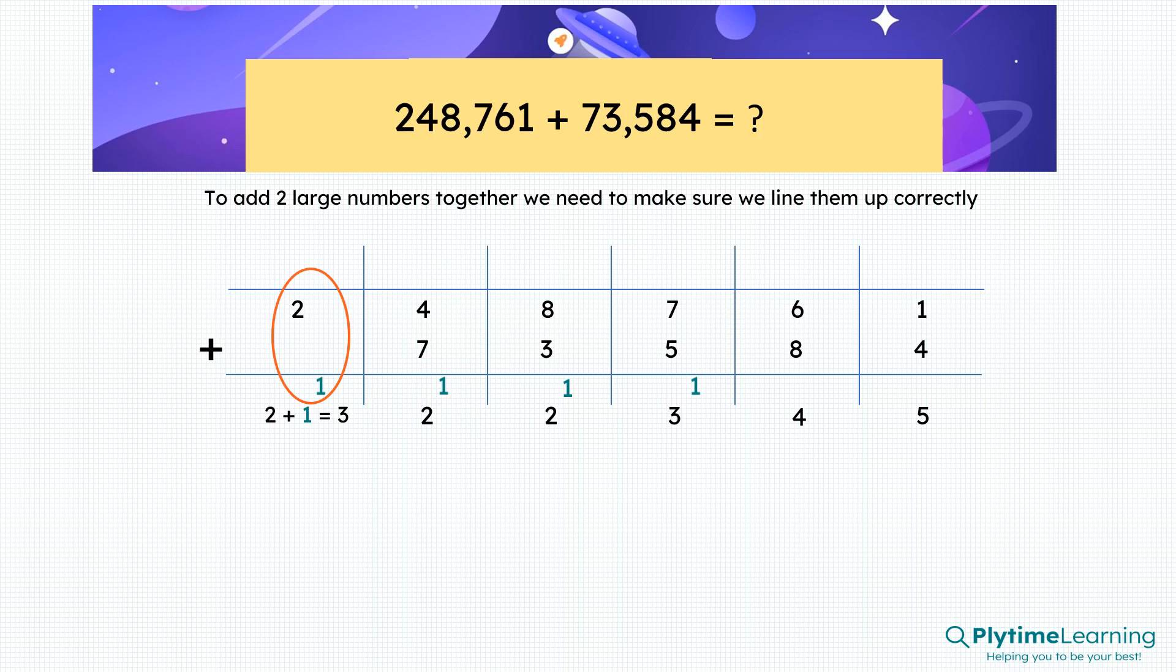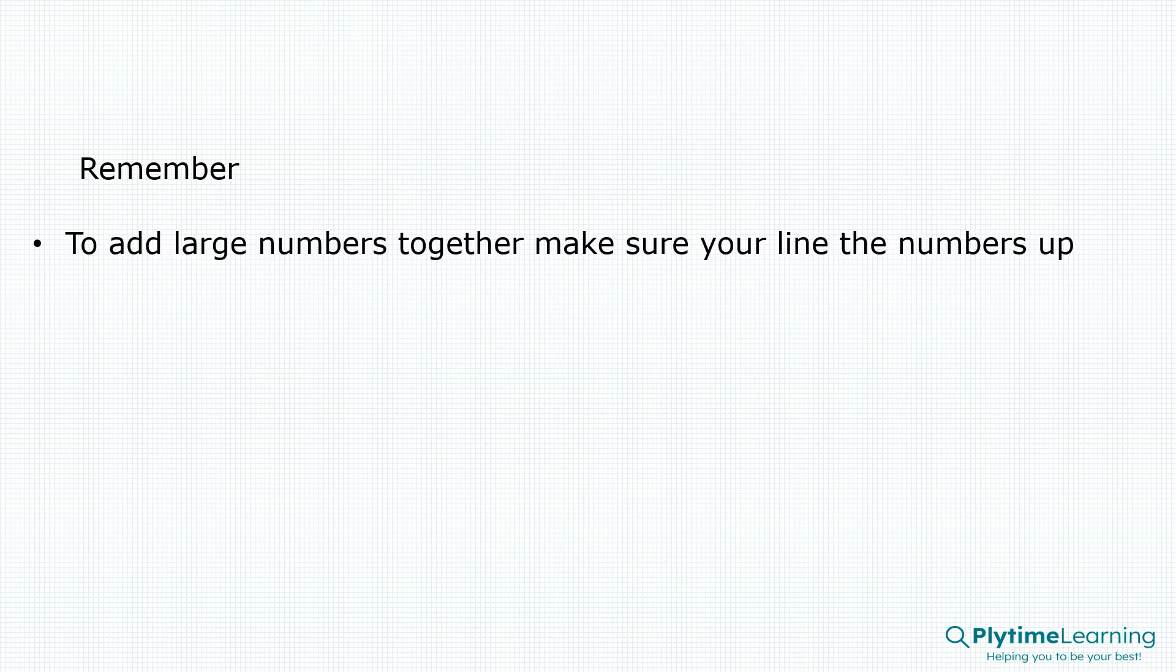And finally, two plus the one we've carried forward is a total of three. It's a total of three hundred and twenty-two thousand, three hundred and forty-five.